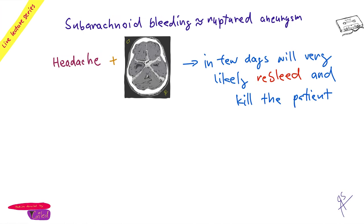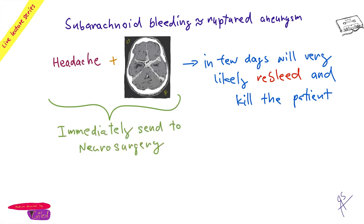If the aneurysm re-ruptures, approximately 60% of people die. The re-bleed mortality is essentially near 100% in practical terms. Your goal is to find the aneurysm and send the patient for neurosurgery immediately. Never underestimate severe headache — better to send someone five times for CT than to miss it once. This could constitute real malpractice.